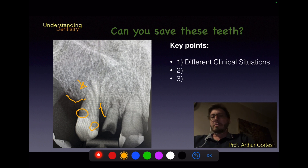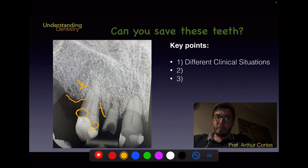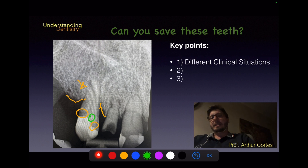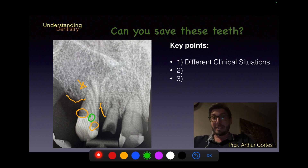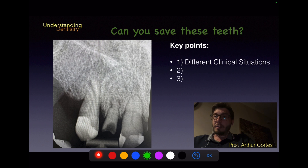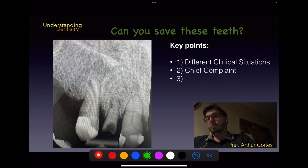Below the restoration on the canine, the radiolucency or radiopacity differs from the rest of the dentine. Comparing with normal dentine radiopacity, we could interpret this as a different radiolucent aspect of the dentine. Remember, radiographs should only be interpreted after a full clinical examination and review of the patient's history.